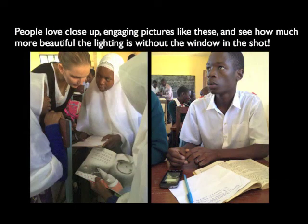Here is the same teacher in the same class in the same room — the photographer just moved 45 degrees to one side and now the light from the window illuminates the scene but the window doesn't appear in the picture, resulting in a much better photograph. People love close-up engaging pictures like these — see how much more beautiful the lighting is without the window in the shot. This lower contrast shot shows that the shadows aren't terribly dark, the highlights aren't terribly bright, and there are plenty of middle tones — that's why you see so much detail in the picture.